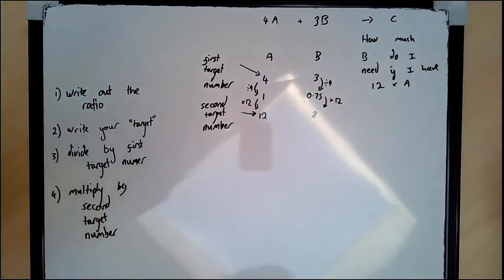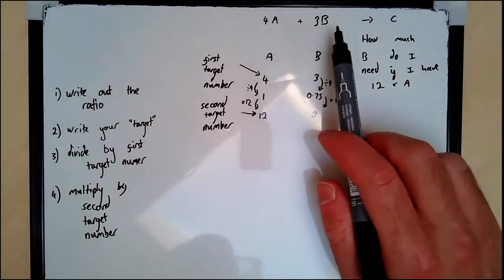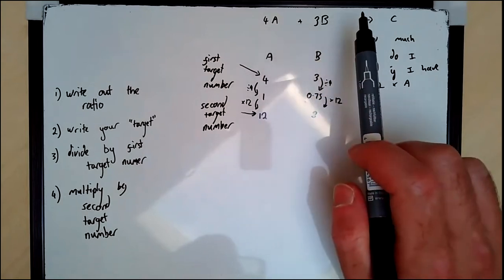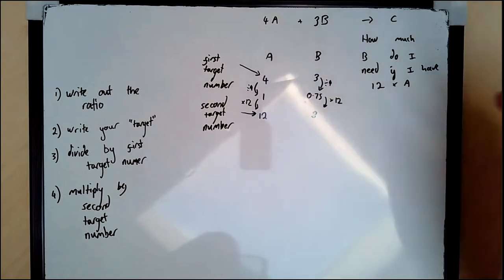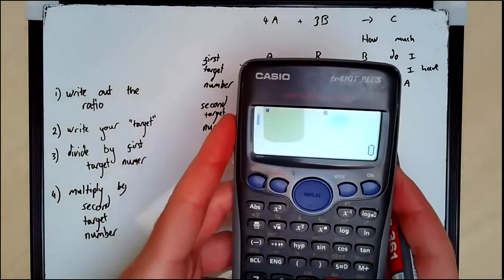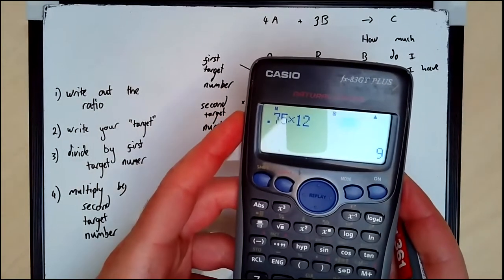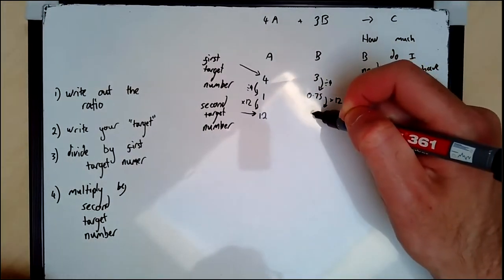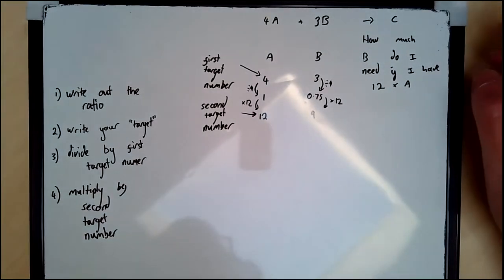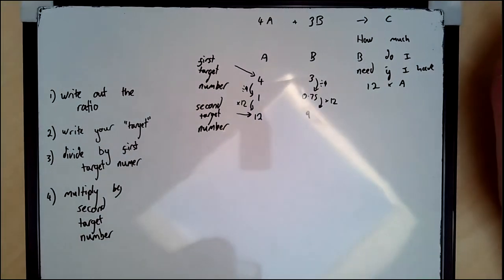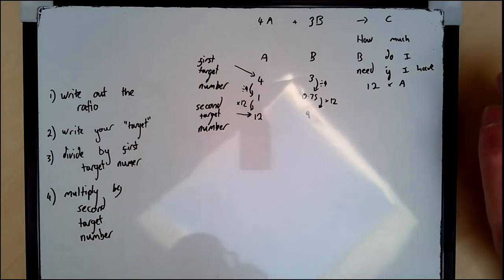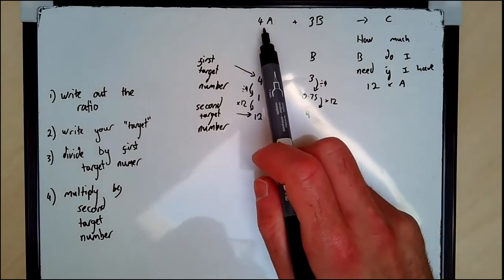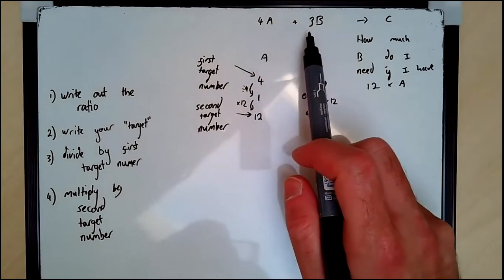Step three, divide by the first target number. I'll explain what all of this means soon, don't worry. And then multiply by second target number. And again, if you have your own way of solving ratios, like honestly, I don't care, do it your way. I'm just going to show you my way and how it works. So let's say I've got A reacting with B to make C. And they are in a ratio of say four to three.